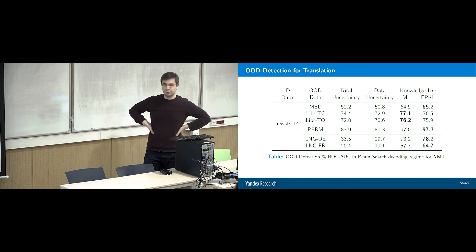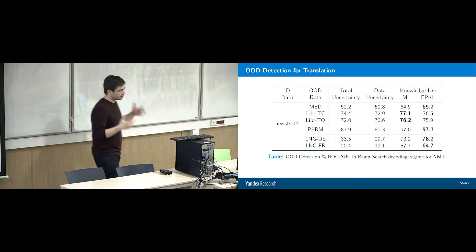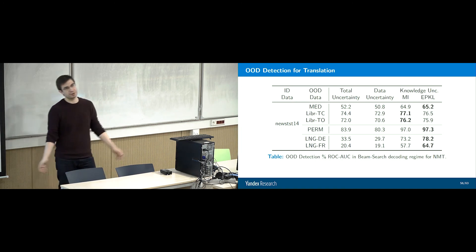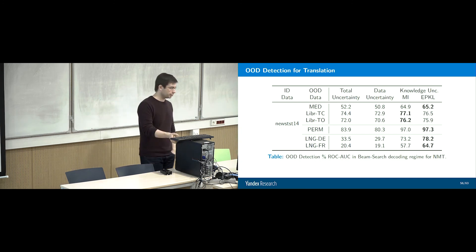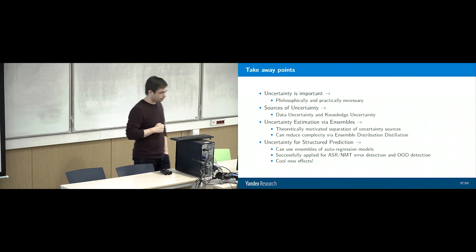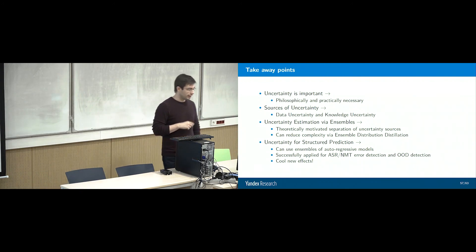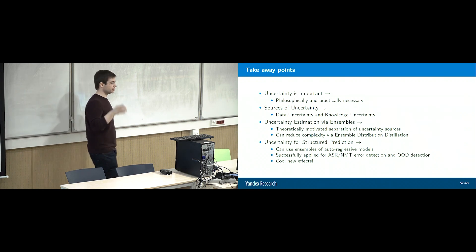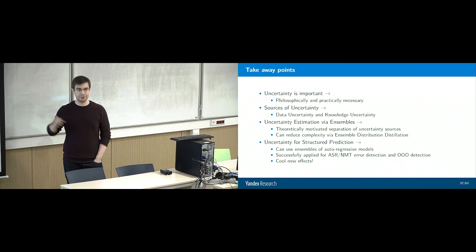This is initial work and we still need more ablation studies. The cool stuff is that there are interesting new effects uncovered. We really show the benefit of decomposing your uncertainties. A lot of people said this decomposition isn't useful — just look at the predictive posterior. Well, it doesn't have everything you need. Uncertainties are philosophically important and also practically useful. Ensembles are the theoretically motivated correct way to estimate and separate out your sources of uncertainty. Ensembles are expensive, so you can do ensemble distribution distillation. We've also shown you can do ensembles of autoregressive models, applicable to sequence and token-level error detection and sequence-level OOD detection.